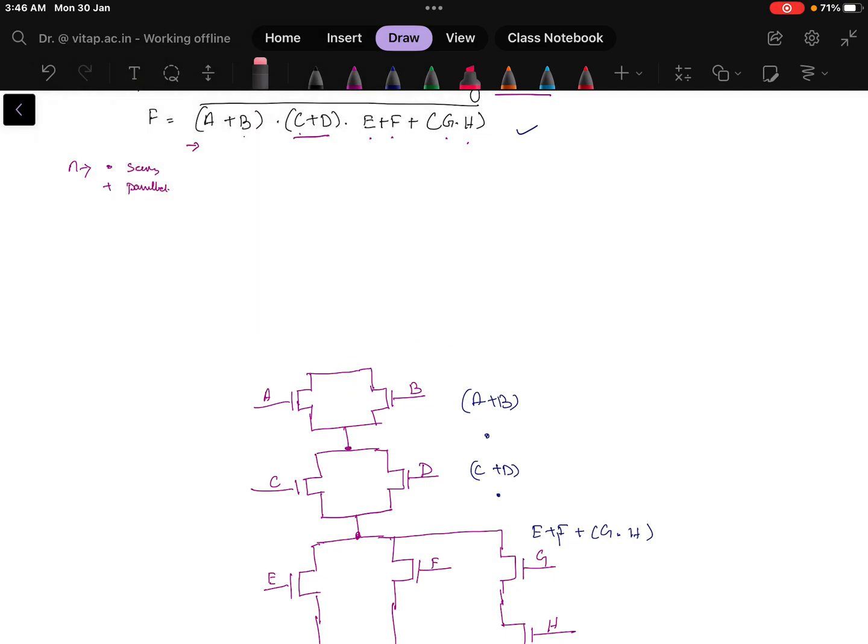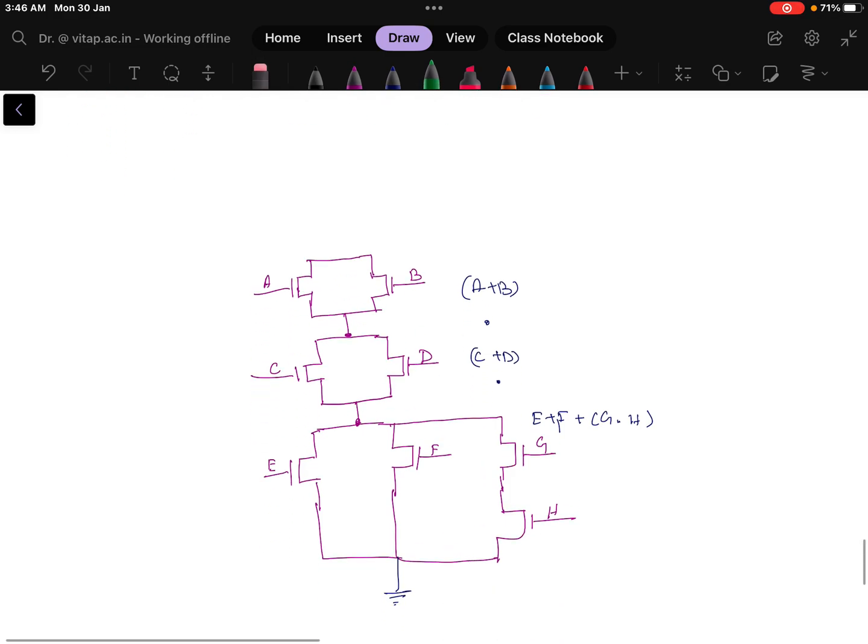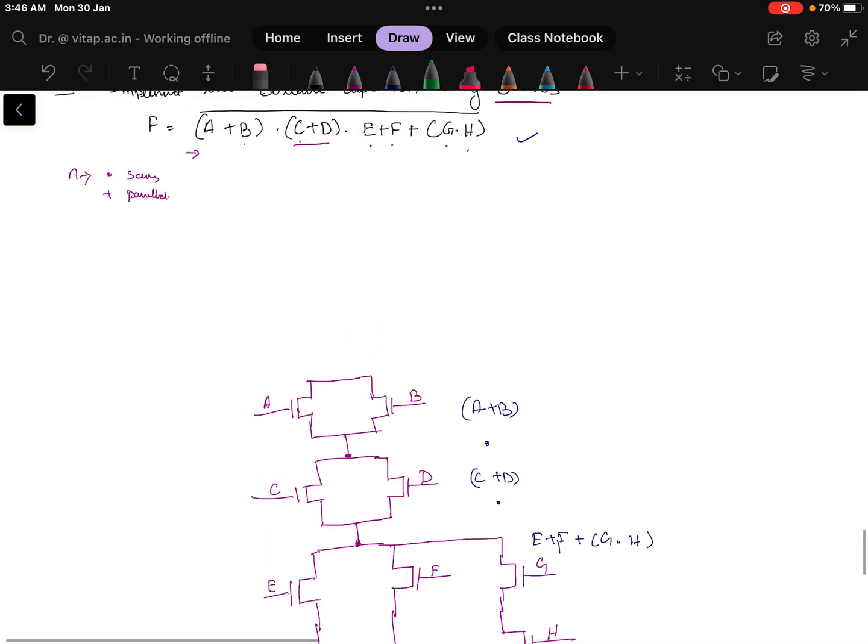Next part is what? Next part is how to implement the PMOS part. PMOS part is what? It is exactly opposite what we have done here. A and B were in parallel. So what we will do? I will take A and B in series. Let me draw it again.